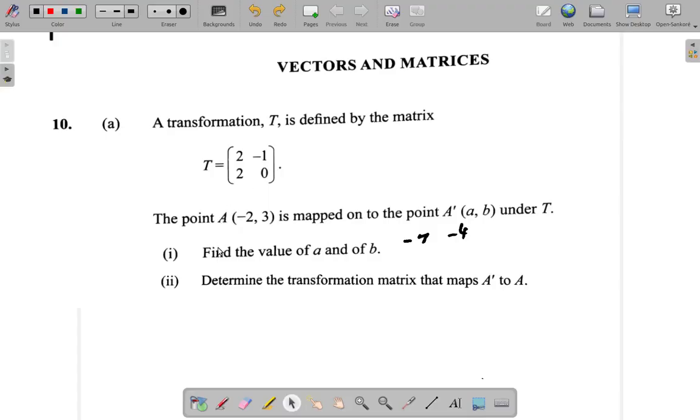Part 2 says determine the transformation matrix that maps A' to A. So this had mapped A to A', T had mapped A to A', now you want A' going back to A.